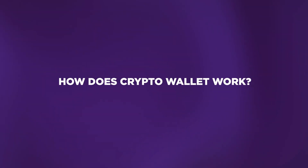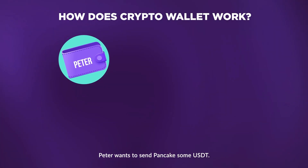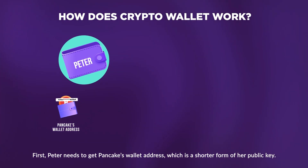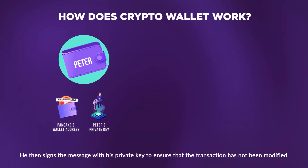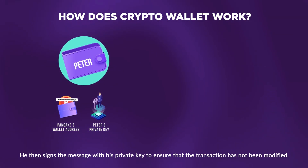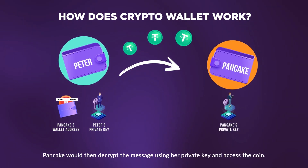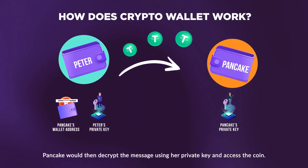How does a crypto wallet work? Peter wants to send Pancake some USDT. First, Peter needs to get Pancake's wallet address, which is a shorter form of her public key. He then signs the message with his private key to ensure that the transaction has not been modified. The transaction is then encrypted and verified. Pancake would then decrypt the message using her private key and access the coin.